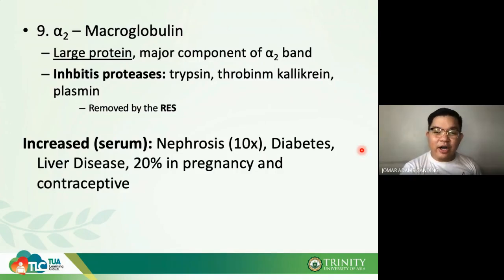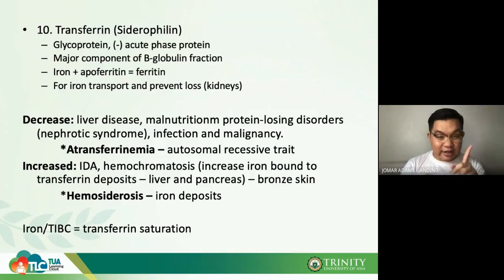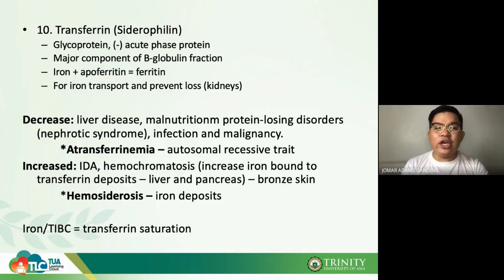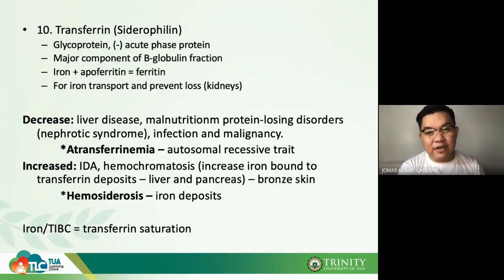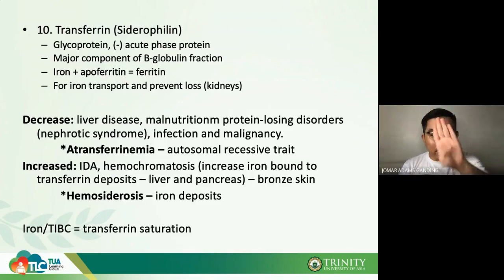Number ten is transferrin, also known as siderophyllin. Transferrin is a glycoprotein that carries ferric iron (Fe3+). It is a negative acute phase reactant — similar to transthyretin, pre-albumin, and albumin. It is a major component of the beta globulin fraction. When iron and apotransferrin combine, they form ferritin. Transferrin is used for the transport of iron and to prevent kidney loss of iron.